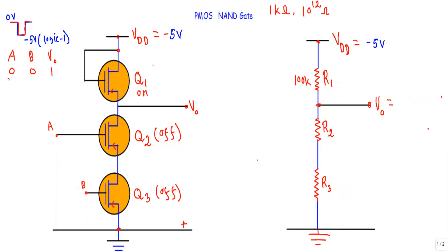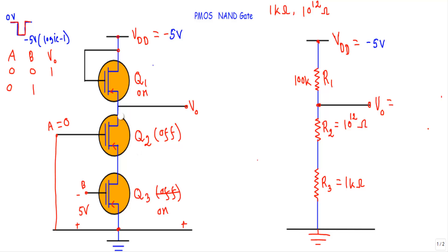Case two: A is at logic zero (grounded) and B is at logic one (minus five volts applied). Q3 is in the ON state and Q2 is in the OFF state. Since Q2 is OFF, its source and drain act as an open circuit — R2 is disconnected from the network. There is no closed current path, so ID equals zero, the voltage drop across R1 is zero, and minus five volts appears at the output — logic one.